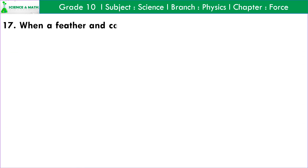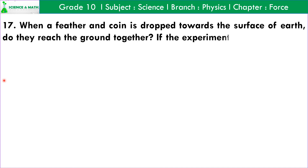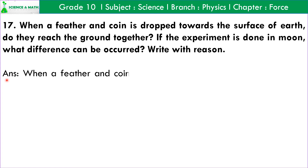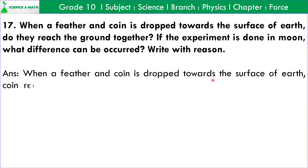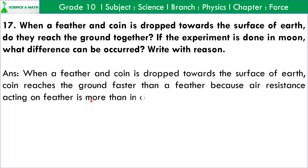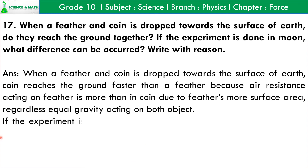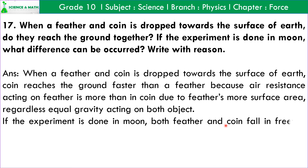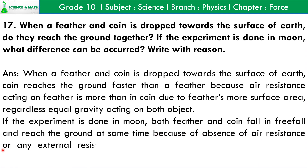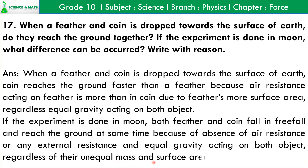Question number 17: When a feather and a coin are dropped towards the surface of earth, do they reach the ground together? Answer: On earth, the coin reaches the ground faster than the feather because air resistance acting on a feather is more than on the coin due to the feather's greater surface area, regardless of equal gravity acting on both objects. If the experiment is done on the moon, both feather and coin fall in freefall and reach the ground at the same time because of the absence of air resistance and equal gravity acting on both objects, regardless of their unequal mass and surface area.